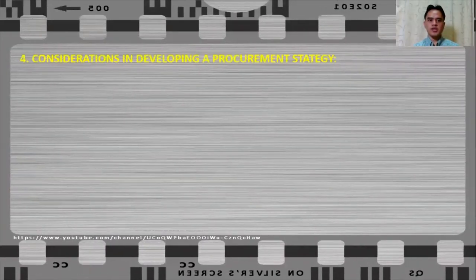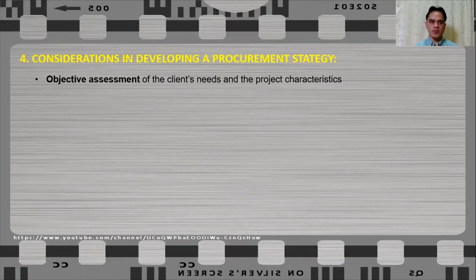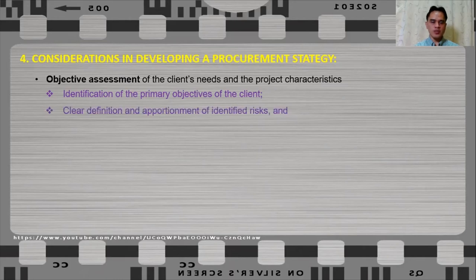The following are the considerations in developing a procurement strategy. First is an objective assessment of the client's needs and project characteristics through identification of the primary objectives of the client. And once these objectives have been identified along with associated risks, these risks should be clearly defined and apportioned.